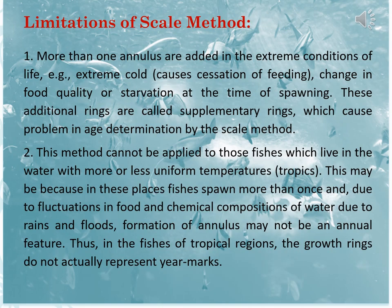But there are limitations of the scale method too. Sometimes more than one annulus is added under extreme conditions of life — extreme cold, scarcity of food, starvation at the time of spawning — all of which may cause additional ring formation, creating supplementary rings and causing problems in age determination. Not only this, the method cannot be applied to fishes that live in water with more or less uniform temperatures, especially in tropical regions, where fishes spawn more than once and fluctuations in food and chemical composition of water due to rain and floods mean annulus formation may not be an annual feature.